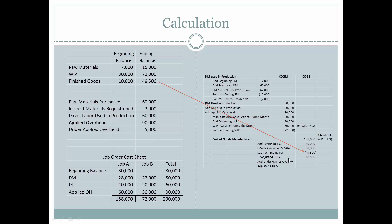Unadjusted cost of goods sold is $118,500. We must now account for any over- or under-applied overhead. In this instance, we had under-applied overhead, so we add it to unadjusted cost of goods sold to get adjusted cost of goods sold. If we had over-applied overhead, we would subtract instead of add.